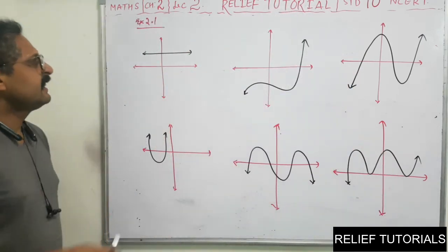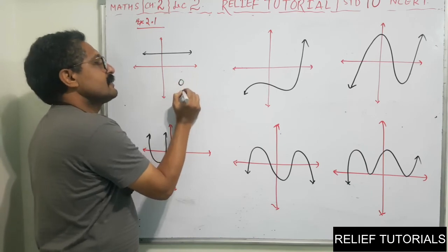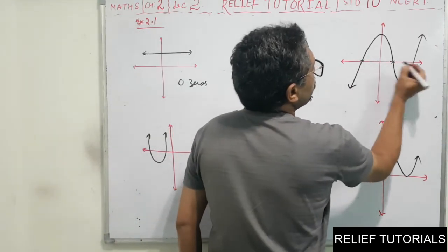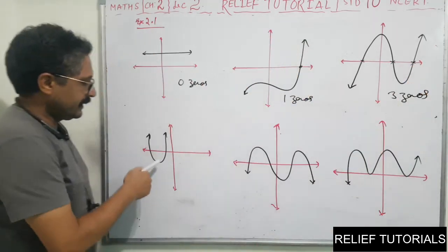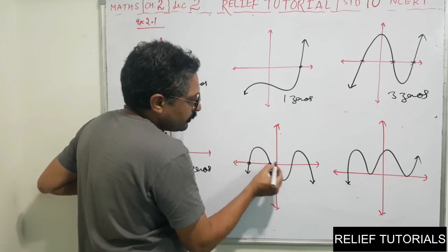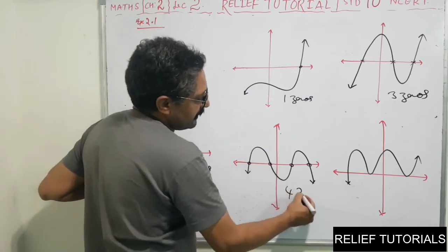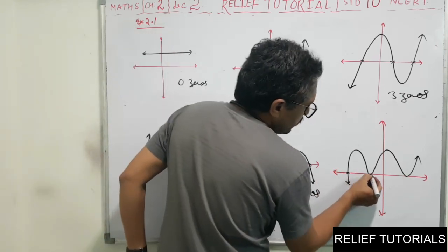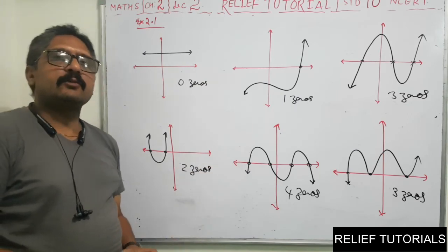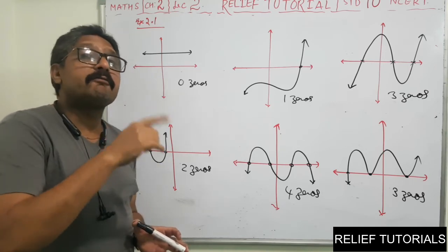Looking at various graphs: if the line does not intersect the X-axis, there are zero zeros. If it intersects at one point, one zero. At two points, two zeros. At three points, three zeros. For a degree-4 polynomial, at one, two, three or four points giving up to four zeros. The number of zeros equals the number of X-axis intersection points.